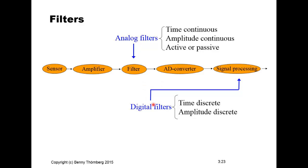Digital filters are usually time-discrete and amplitude-discrete. There are some cases of time-discrete filters that are amplitude-continuous — switch capacitor filters — but those exist quite rarely. The most common digital signal processing is time-discrete and amplitude-discrete.